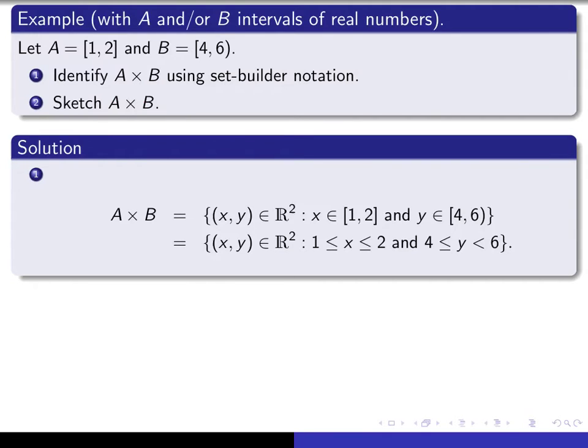Well, here's A × B. The first line gives you the working definition of it and the second line gives you a slightly more detailed version of what it is. The notation R² refers to the Cartesian product R × R. And the exact working definition of this is it's the set of (x, y) in R² such that x is in A and y is in B. But to say that x is in A is to say that x is greater than or equal to 1 and less than or equal to 2. And to say that y is in here is to say that y is greater than or equal to 4 and strictly smaller than 6.